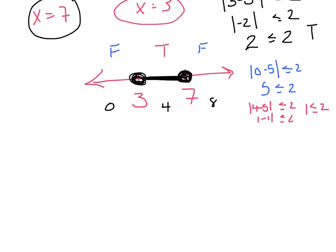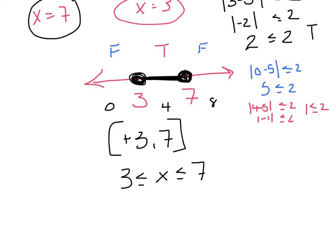I can sum this up in two ways. I can say positive three comma seven, and because they are closed circles, I can stick brackets around them. Or I can use inequality notation and say three is less than or equal to x is less than or equal to seven. Notice when I shade in the middle, the x is in the middle, and as long as you put your min here and your max here, these will both be the less than symbols.